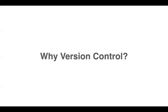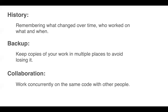So why do we need version control? Version control is a system that records changes to a file or set of files over time so that you can recall a specific version later. As a developer, a version control system is a very wise thing to use. It allows you to revert selected files back to a previous state, revert the entire project to a previous state, compare changes over time, see who last modified something that might be causing a problem or introduced an issue, and also serves as a backup. Most importantly, it enables team collaboration.